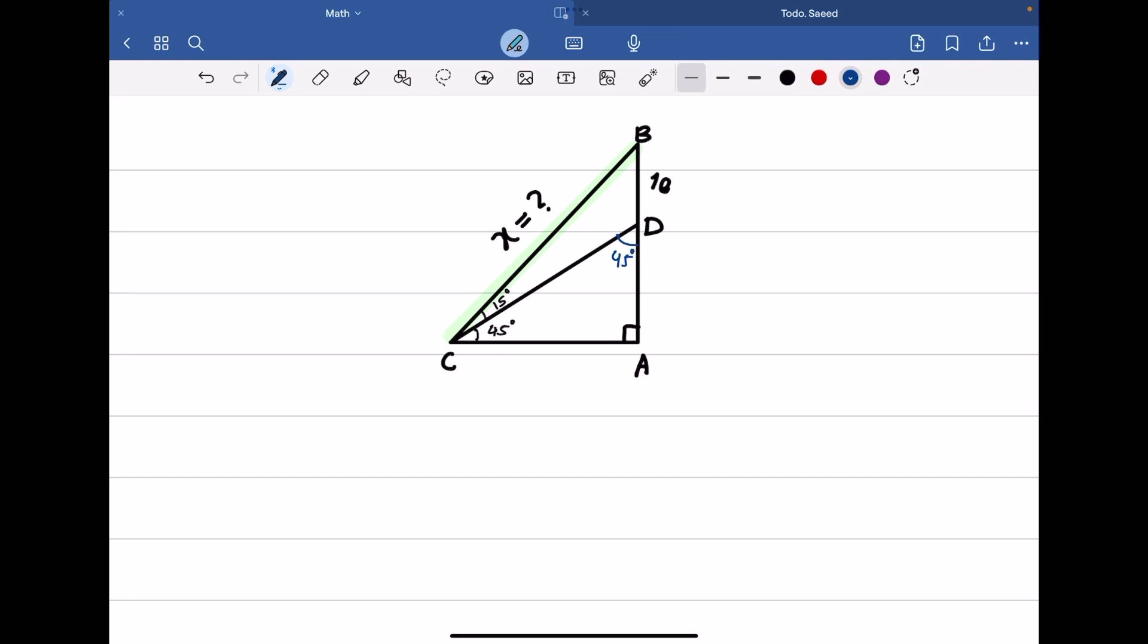Because triangle ACD has two 45-degree angles, the sides in this triangle are equal. I'll call this length Y.